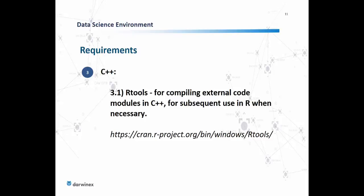Finally, for C++, as mentioned, in specific cases with R we may wish to employ C++ modules, and for that we'll need Rtools. That will be for compiling external code modules in C++ for subsequent use in R when necessary. Rtools can also be obtained from the CRAN R project — visit the link shown or the blog post where the link is available.